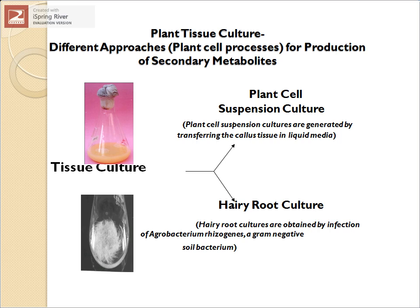When we talk about plant tissue culture, it is basically growing plant cells for production of secondary metabolites predominantly. There are two different methods of plant tissue culture: the first one is plant cell suspension culture, and the second one is hairy root culture, which we already studied in the last class.